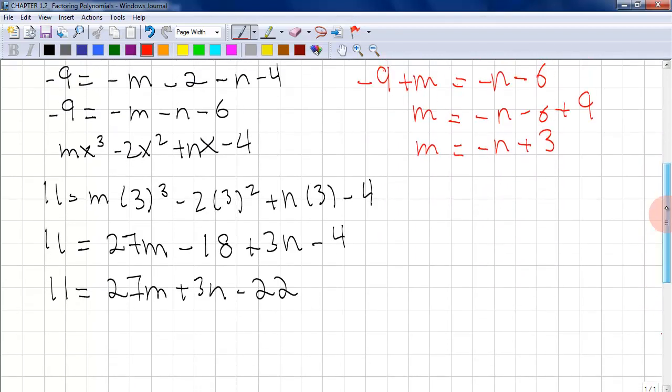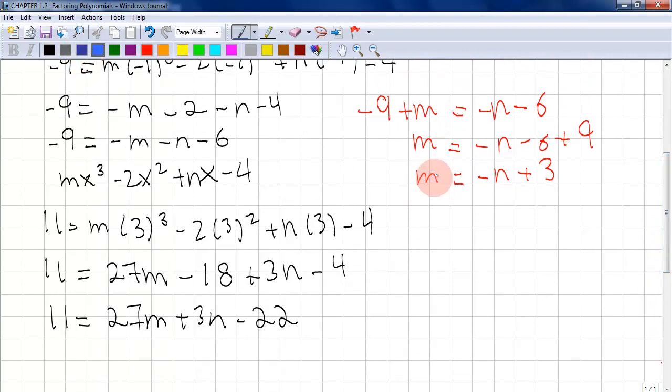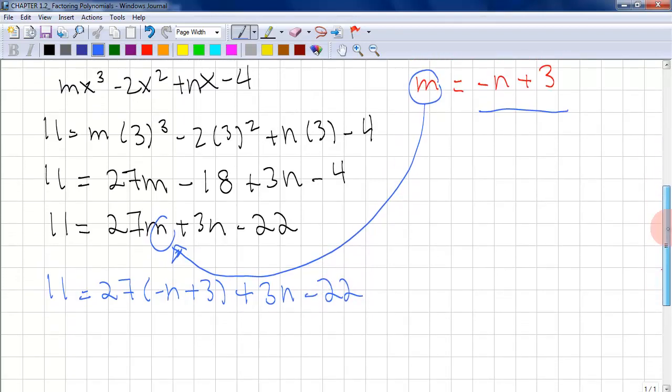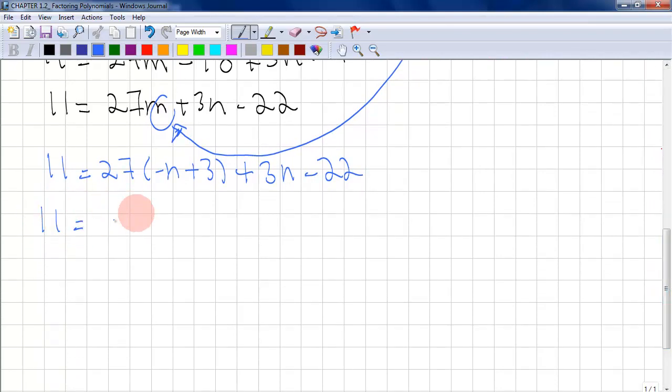So now since we have this m right here and we have an m right here, what we can do is we can use this equation and substitute it for this m right here. Let's do that now. Let's do 11 equals 27(-n + 3) + 3n - 22. Now let's simplify this again. So it'll be -27n. And 27 multiplied by 3 is 81, a big number. So +81 + 3n - 22.